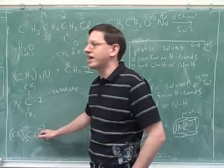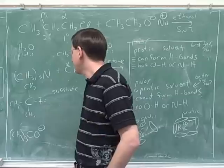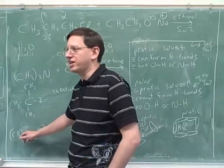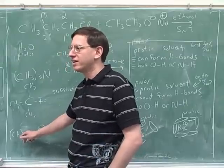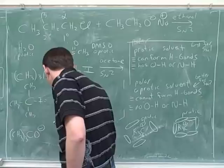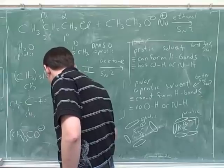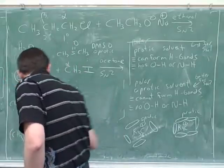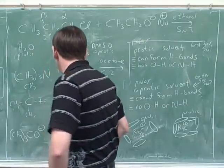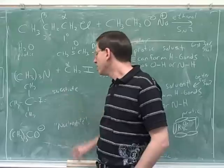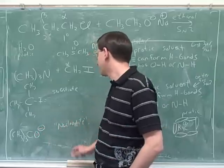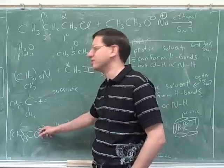Here's that tert-butyl oxide we were talking about last time. A naive person might think this is a good nucleophile because it's got a nice negative charge. But this has too much steric hindrance to be a good nucleophile, so instead it's going to have to act like a base. This is in quotation marks because it's so bulky it actually can't be a nucleophile.